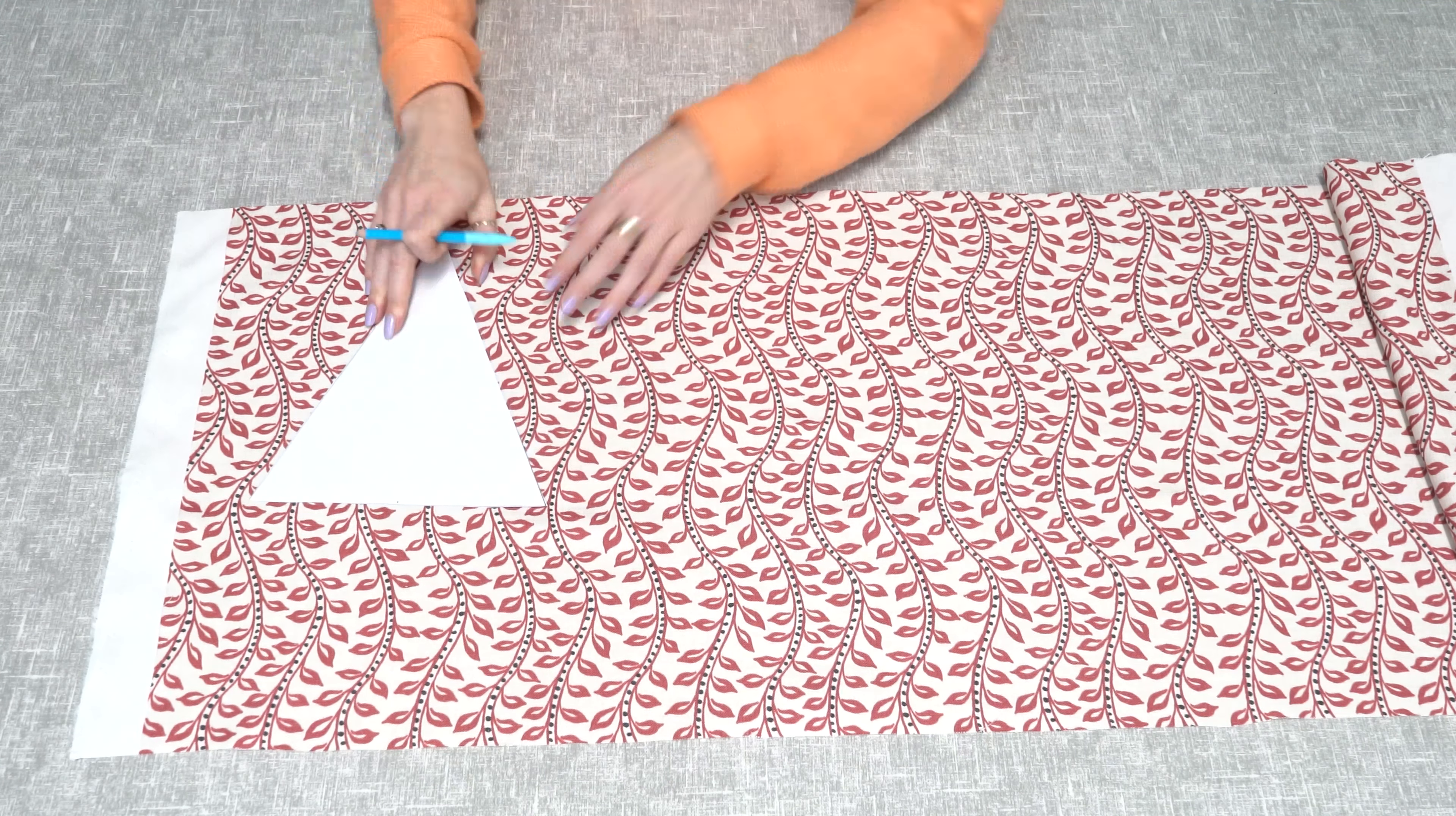Now you just need to cut around all the pencil lines and then you'll have your bunting pieces ready to sew. Once you've cut out your four pieces, you just need to repeat this with your other fabrics. Like I said, we are choosing five different fabrics to have alternating bunting.